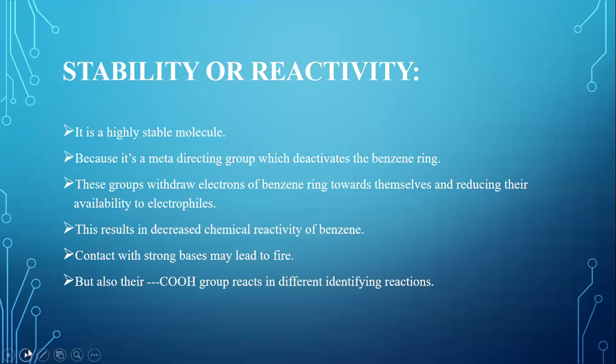These groups withdraw the electron of the benzene ring towards themselves, therefore reducing their availability to electrophiles. Electrophiles are basically electron-loving species. This results in the decreased chemical reactivity of benzene.